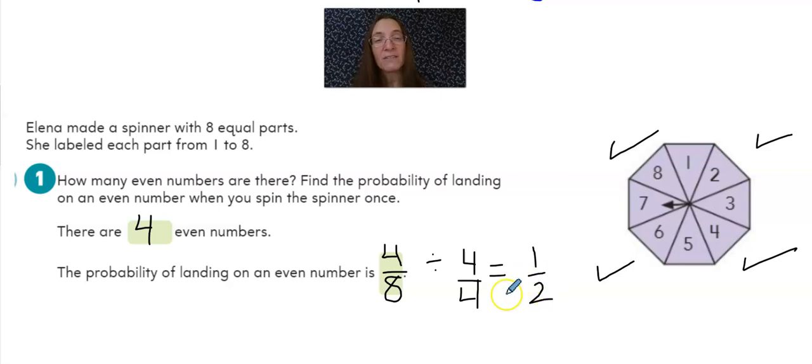And so just like we looked at our last picture, four eighths is equivalent to one half. Both of these will be considered correct answers on this type of work.